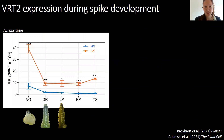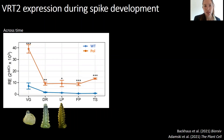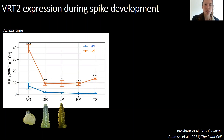That's really interesting because Nikolaj and Hans's work also showed that normally, as shown here in blue in the wild type, VRT2 expression would be downregulated upon this floral transition and then stay very low, while in polonicum this downregulation seems to fail and the expression of VRT2 is still high in the double ridge and glume primordium stage.